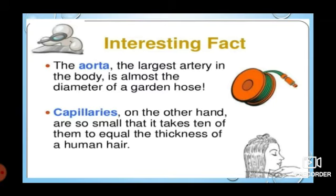An interesting fact is that the aorta, the largest artery in the body, is almost the diameter of a garden hose. Capillaries, on the other hand, are so small that it takes 10 of them to equal the thickness of a human hair.